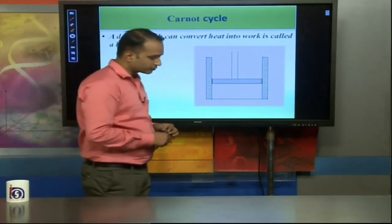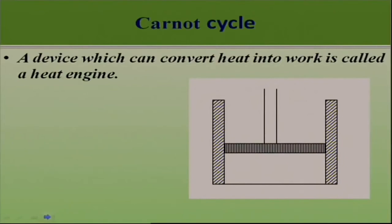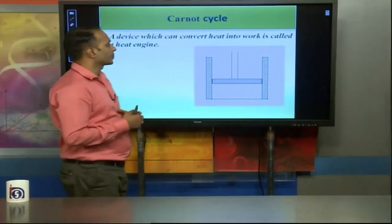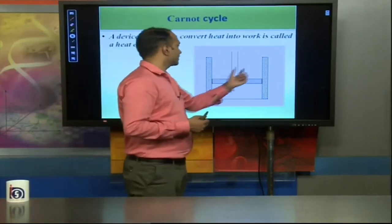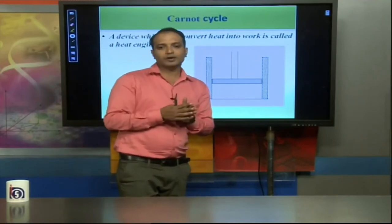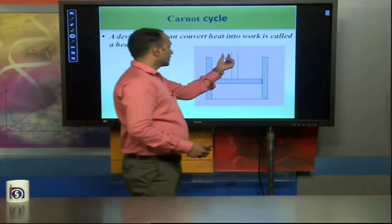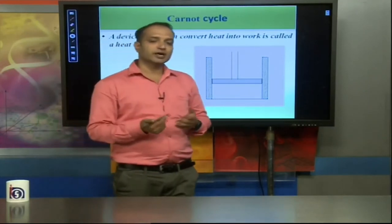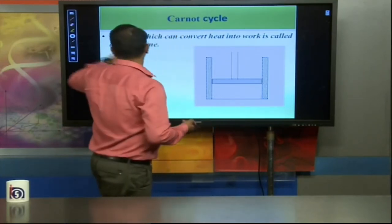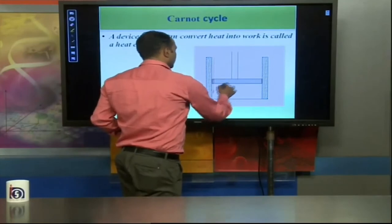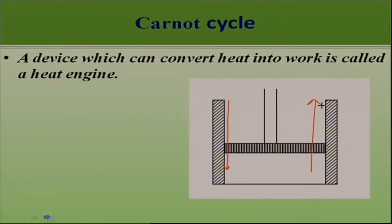Carnot Cycle. The second law's extension for heat engines is understood using the Carnot cycle. A device which can convert heat into work is known as a heat engine, where work done is assumed to transfer completely into energy. In this system, there are two reservoirs — one hot body and one cold body. One is kept at high temperature, the other at low temperature. Between them a frictionless piston is placed, which produces no friction with its boundary when moved up or down.